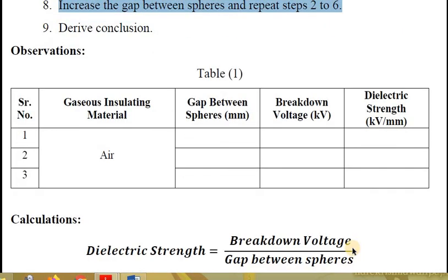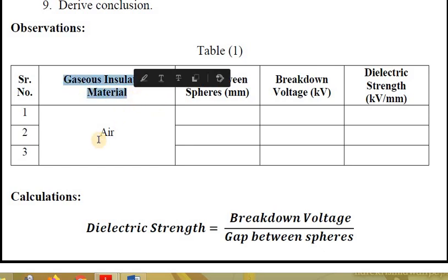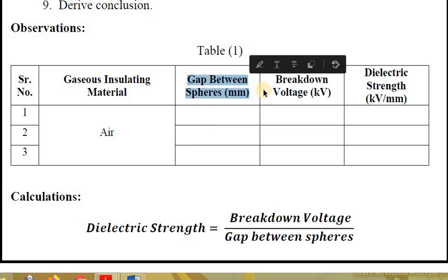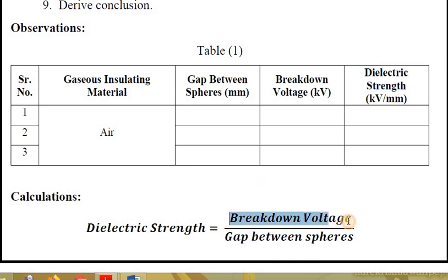After this, increase the gap between the spheres and repeat the steps. Then draw your conclusion. The observation table has 5 columns: serial number, gaseous insulating material (recorded as air), gap between the spheres, breakdown voltage in kilovolts, and dielectric strength — which is the ratio of breakdown voltage to the gap between the spheres. You can take gap values of 5 mm, 10 mm, 15 mm, and so on.